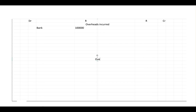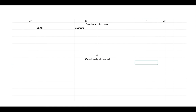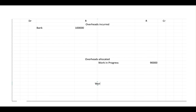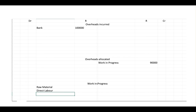So we created another account in introductory accounting called 'overheads allocated'. Your lecturers would have said 100,000 was incurred but 90,000 was actually allocated during the year, and you took that through to your work in progress account. The WIP account would have included raw materials, direct labor - all contra to bank or creditors - and then the overheads allocated coming in at 90,000 rand.